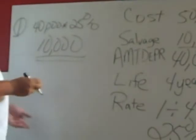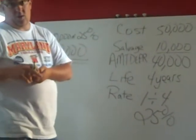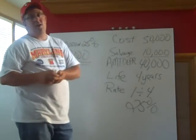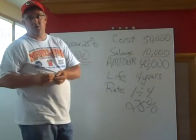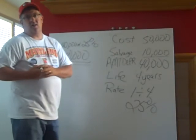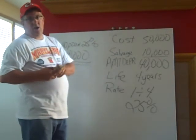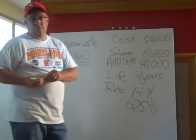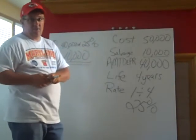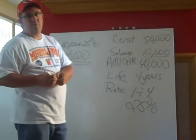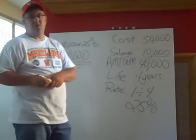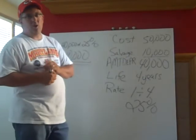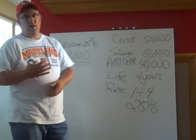Our journal entry would be to debit — or increase — depreciation expense by $10,000, which goes on the income statement, and credit accumulated depreciation for $10,000. Accumulated depreciation is called the contra asset; it offsets the cost of the asset. We report our fixed assets at what's called net book value, which is cost minus accumulated depreciation.